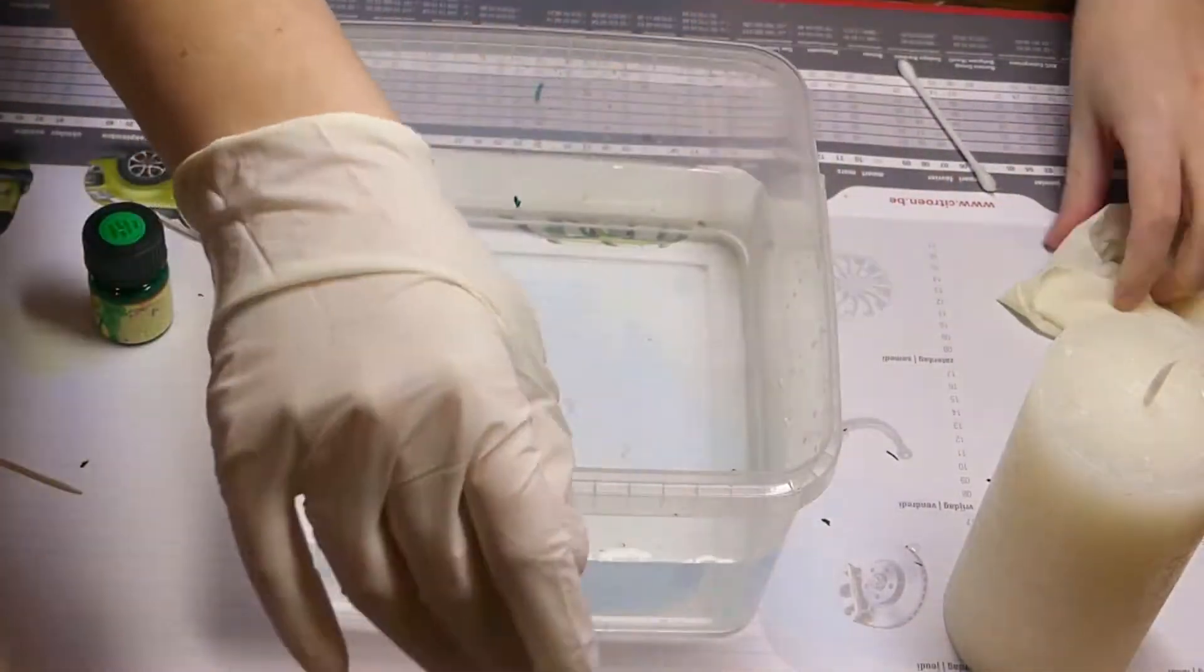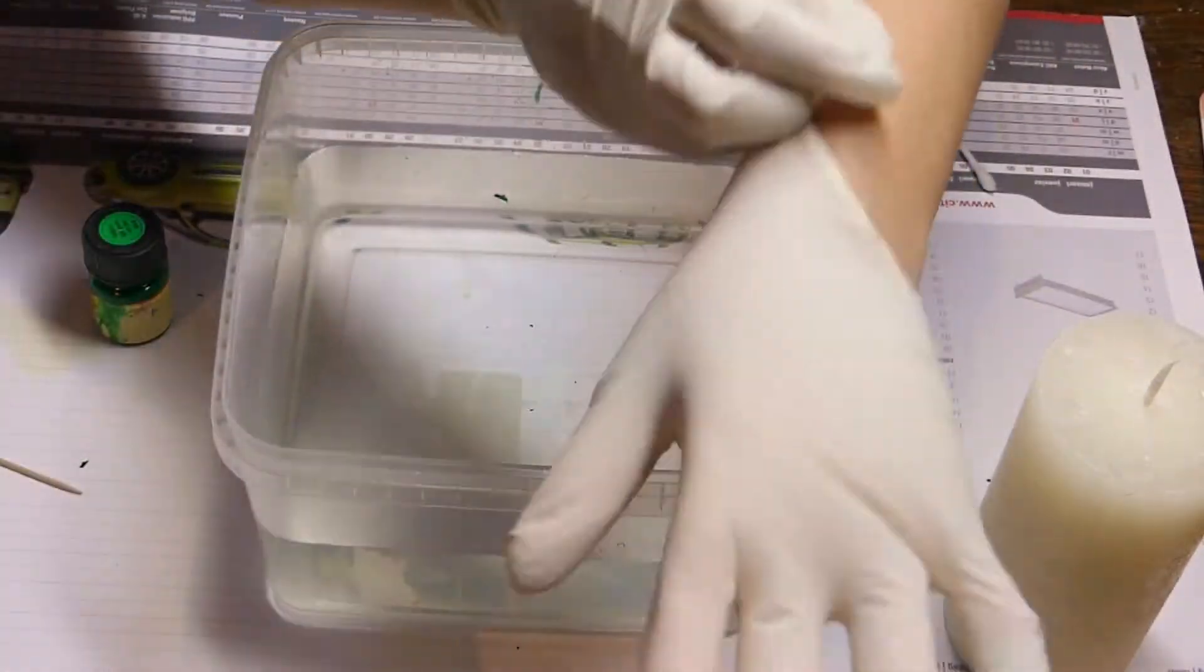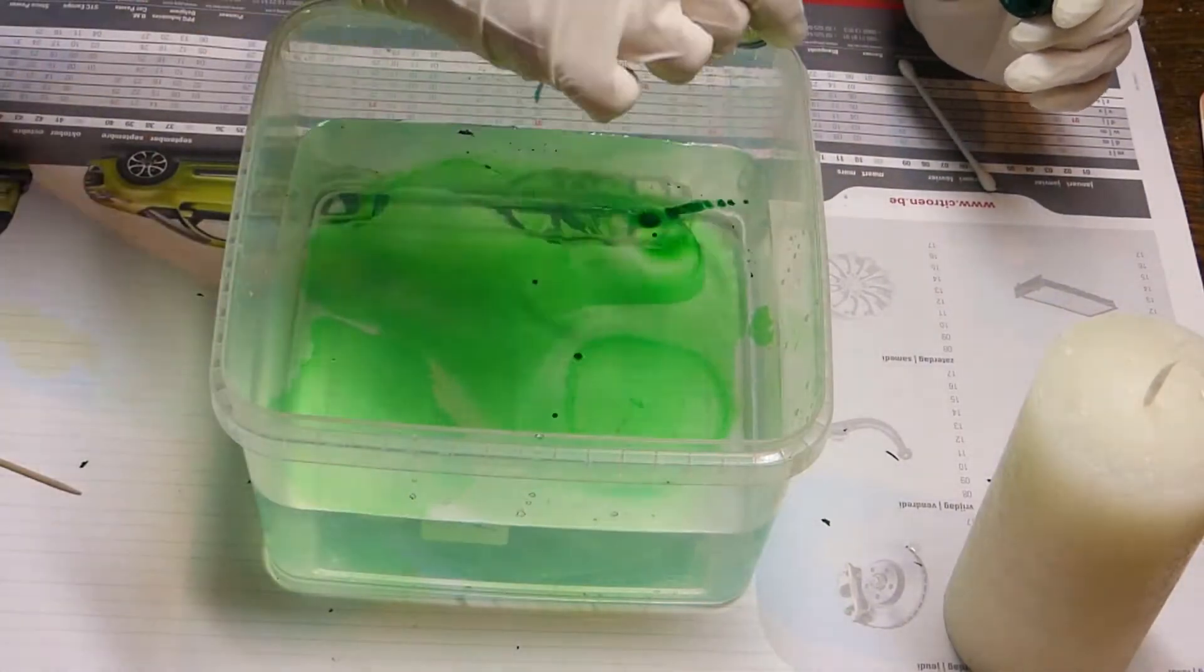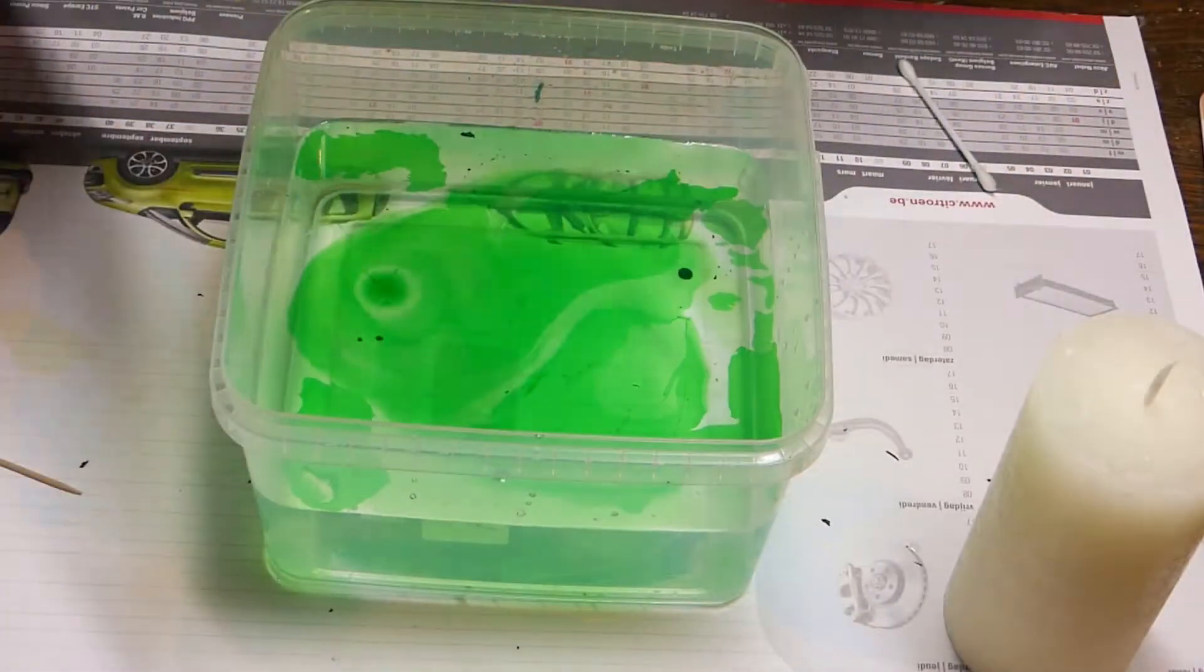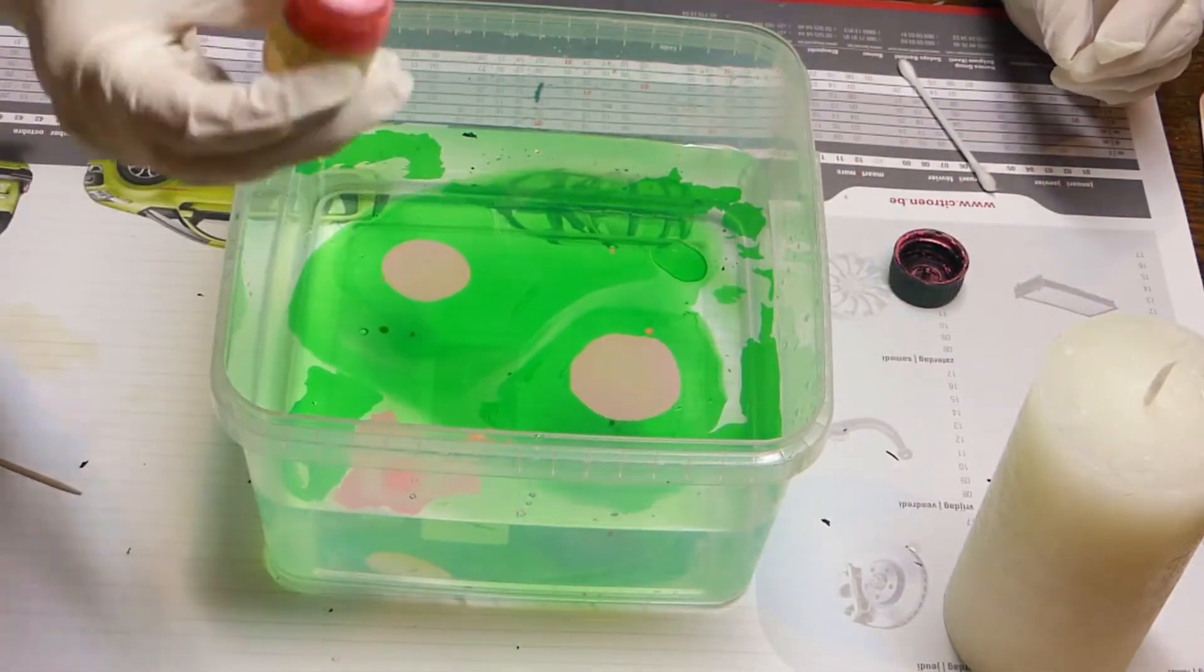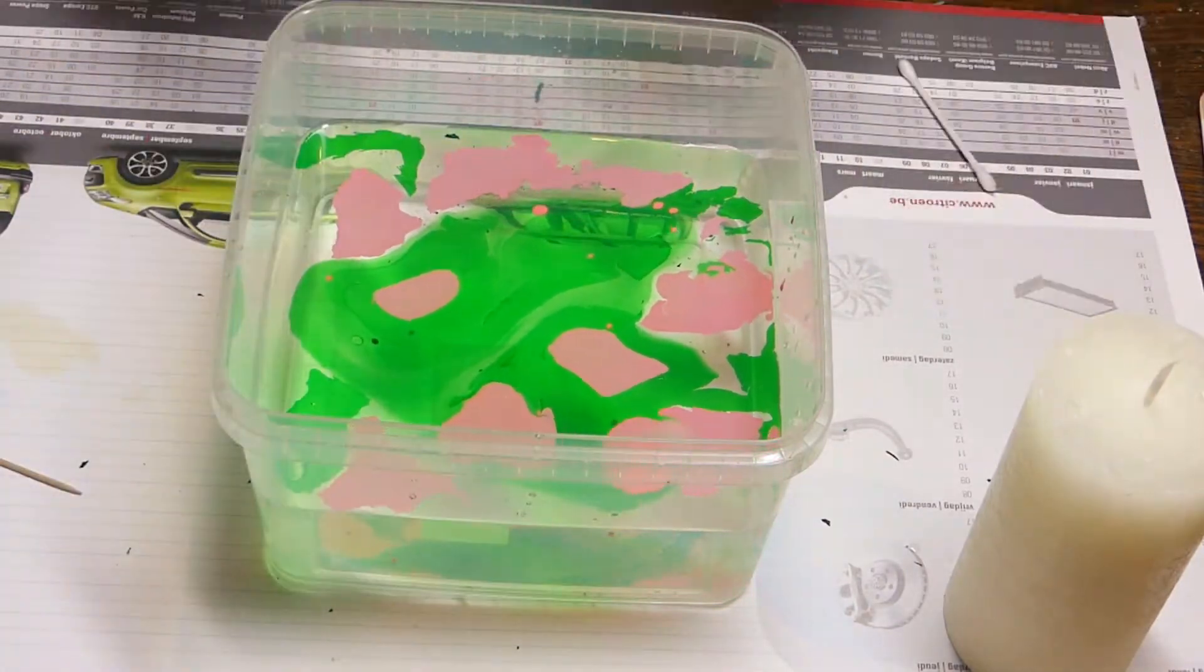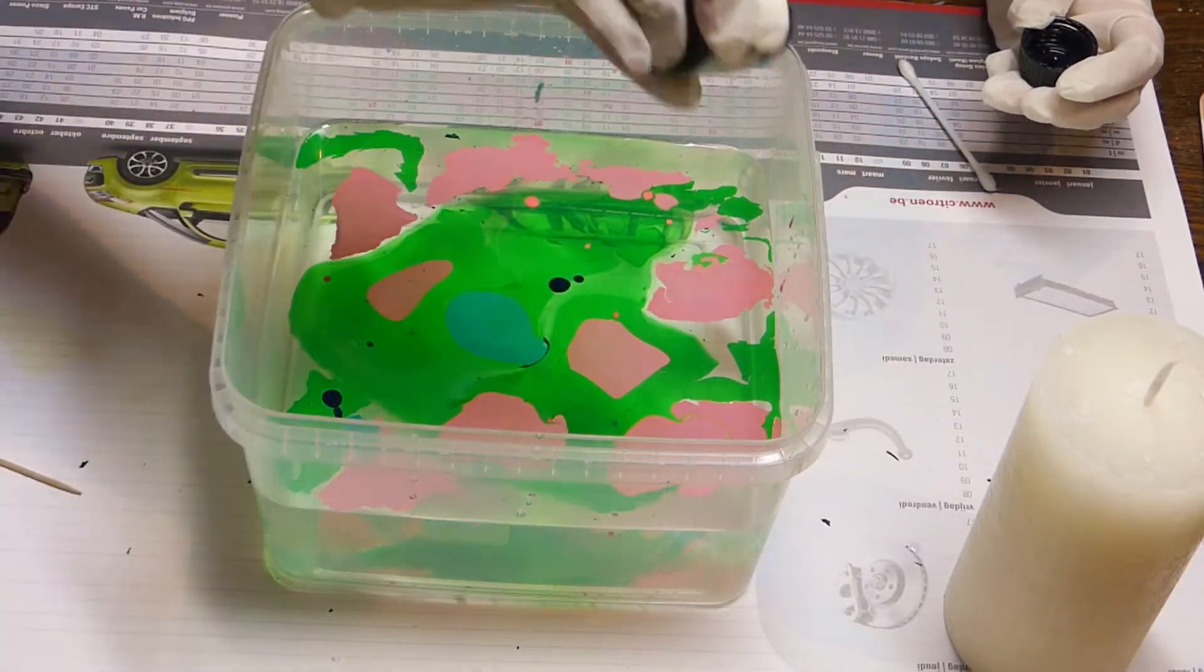Shake the paints before use. Add the first color to your water. Make sure you spread it out so that it will cover the entire length of your candle. Add a few drops of a second color here and there. Keep adding more colors until you have the color scheme you're going for.